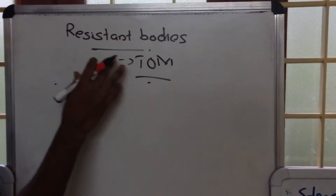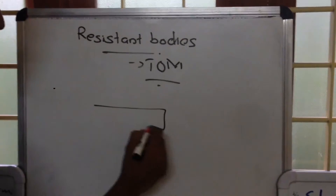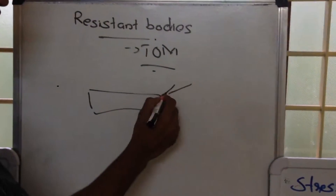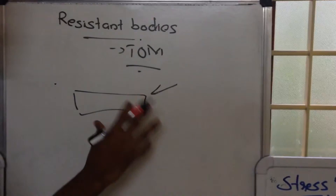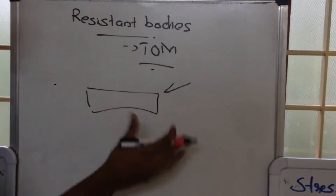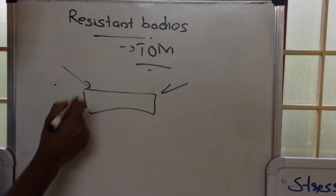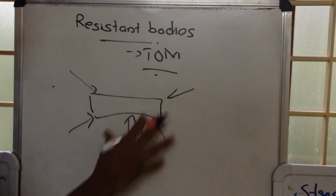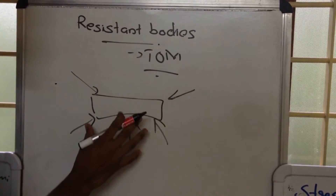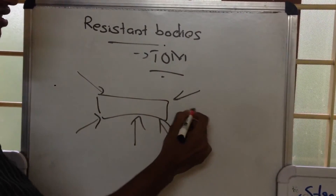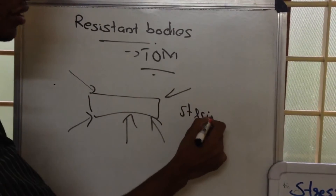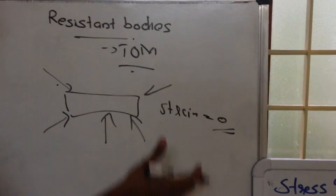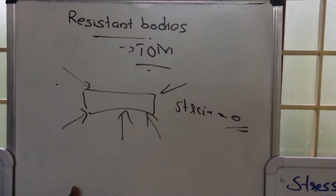What do you mean by a resistant body? A resistant body is a body which does not deform, or there is no considerable deformation on the application of external forces. In the case of a resistant body, the strain will be almost equal to zero. There will not be any deformation. Such bodies are called resistant bodies.